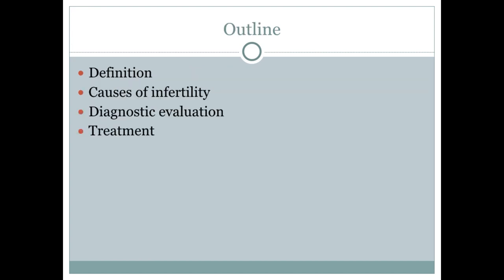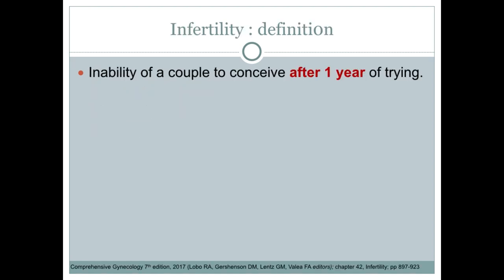This is the outline of my lecture. First, we define what is infertility. Infertility is defined as the inability of a couple to conceive after one year of trying.